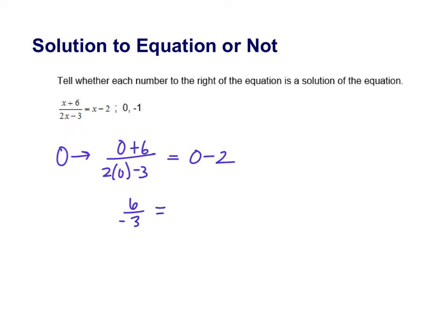Equals 0 minus 2 over on the right is negative 2. 6 divided by negative 3 is negative 2, equals negative 2, so you can see that it worked out. So 0 is a solution. We plugged it in and the left side equals the right side. So is 0 a solution? Yes, it is.